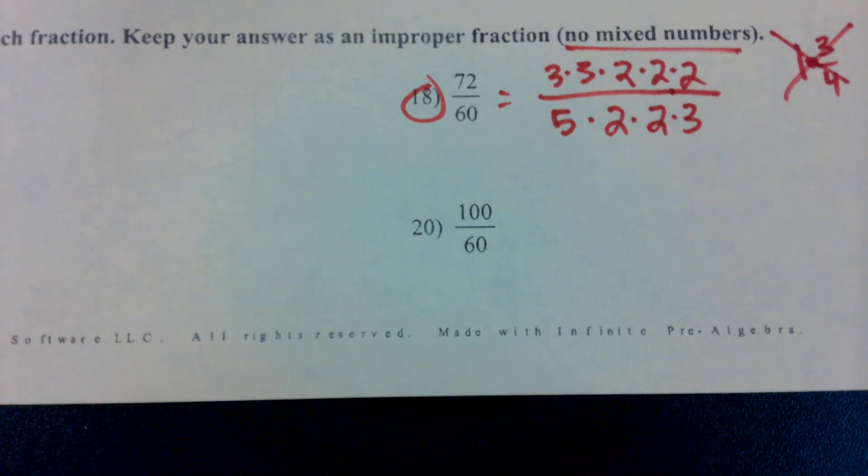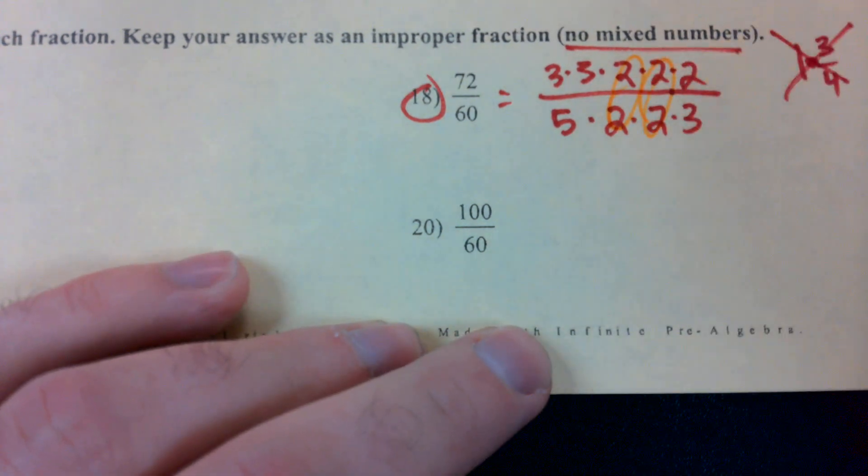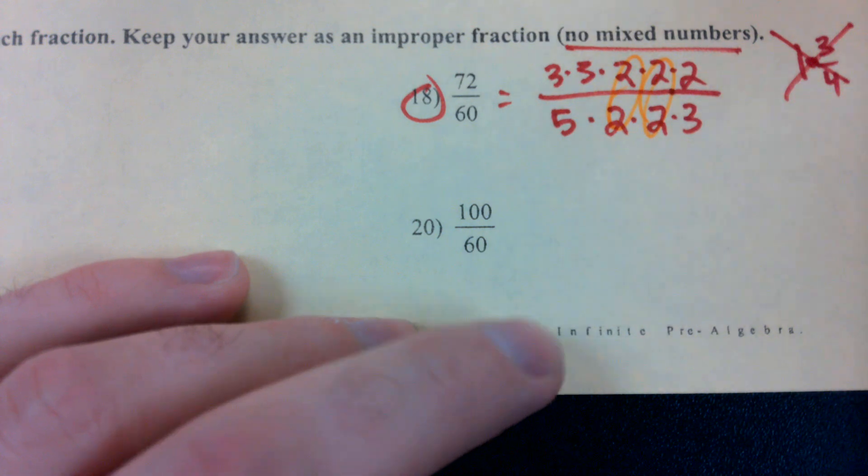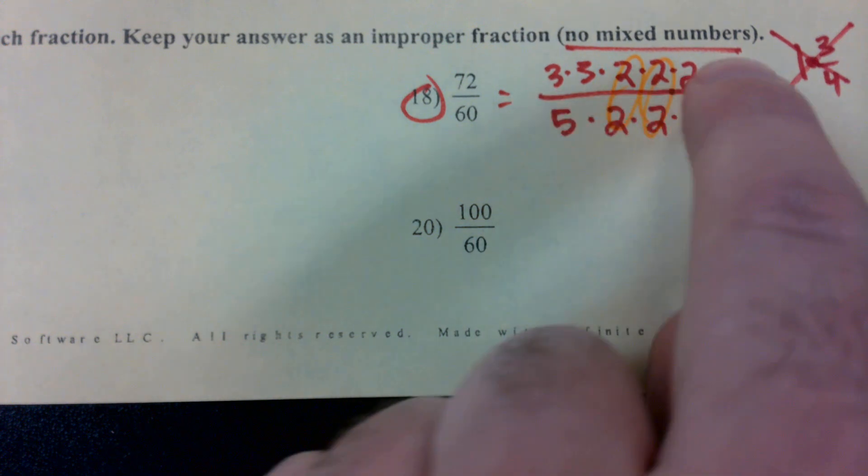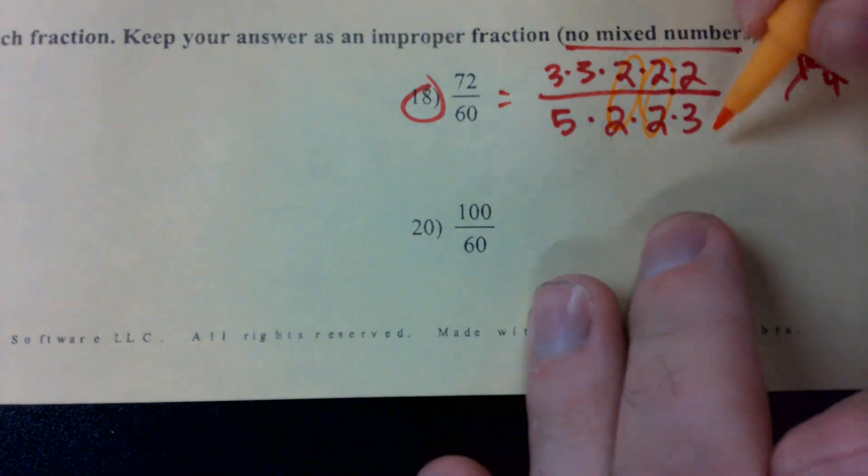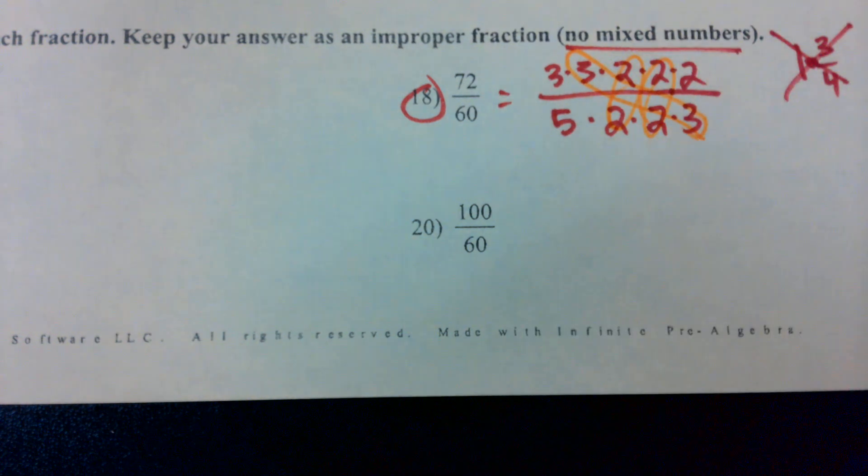Again, we're looking for common factors. Twos, twos. Is that it? Yeah, that looks like it's it. Did I do something wrong? Three times three. Nine times three. Oh, my bad. There's another three. Boom. There we go. A pair of threes.